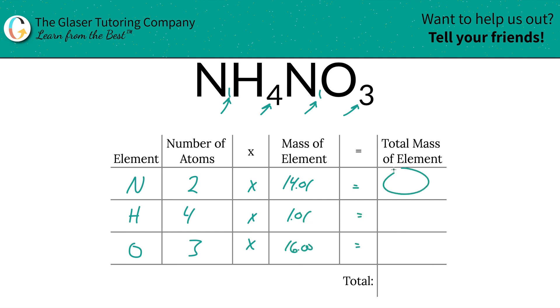Then we're going to find the total mass of each element by multiplying this row across. The total mass of nitrogen is 28.02. Total mass of hydrogen is 4.04, and the total mass of oxygen is 48. I don't even know what number that is. There we go, 48. Well, that doesn't even look any better than 8, but you know what I'm saying.